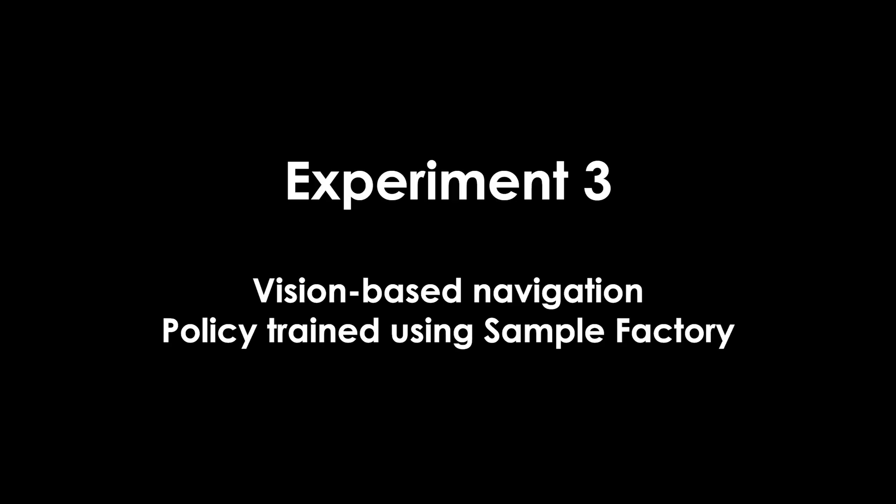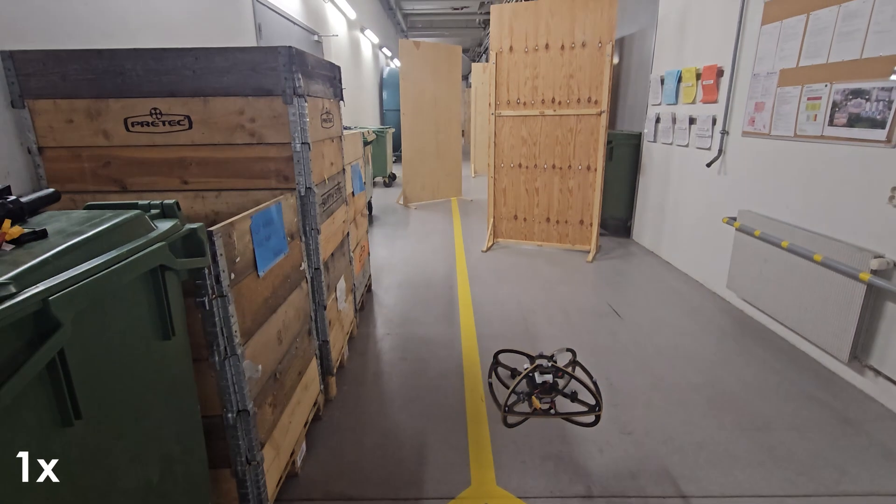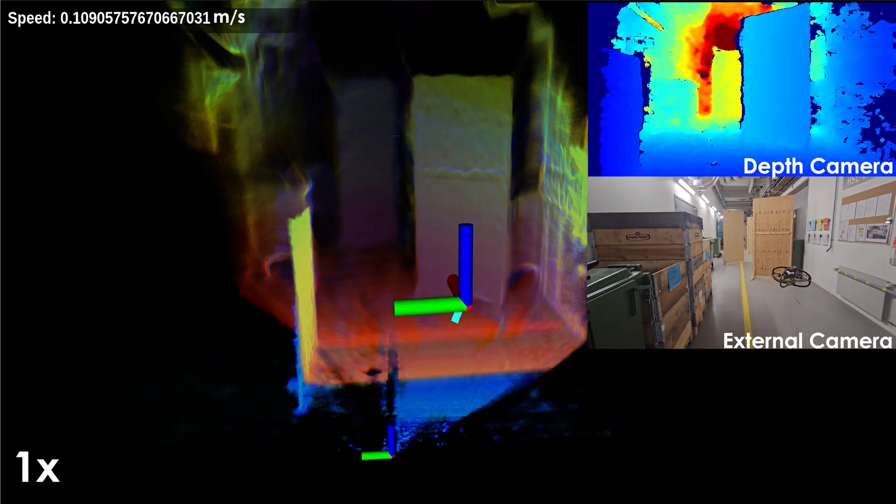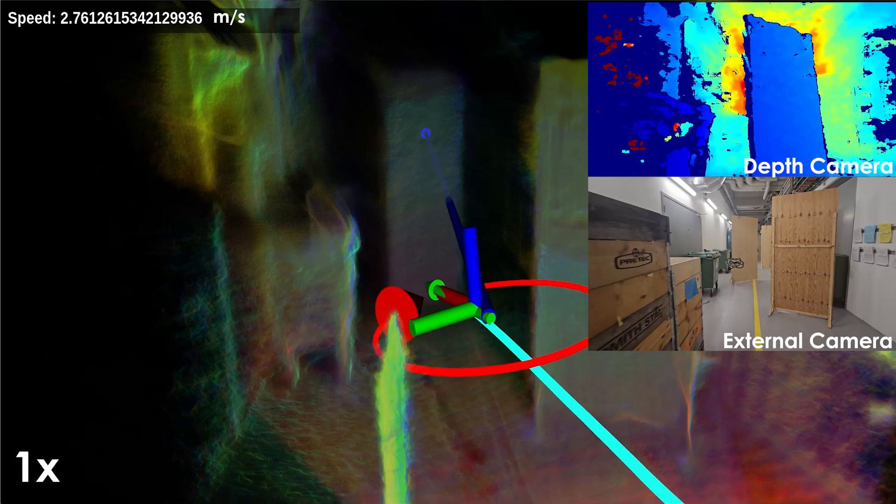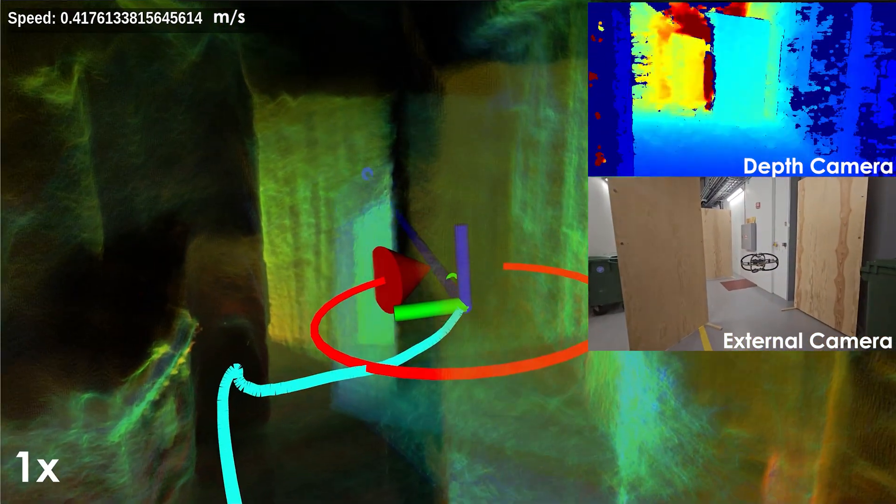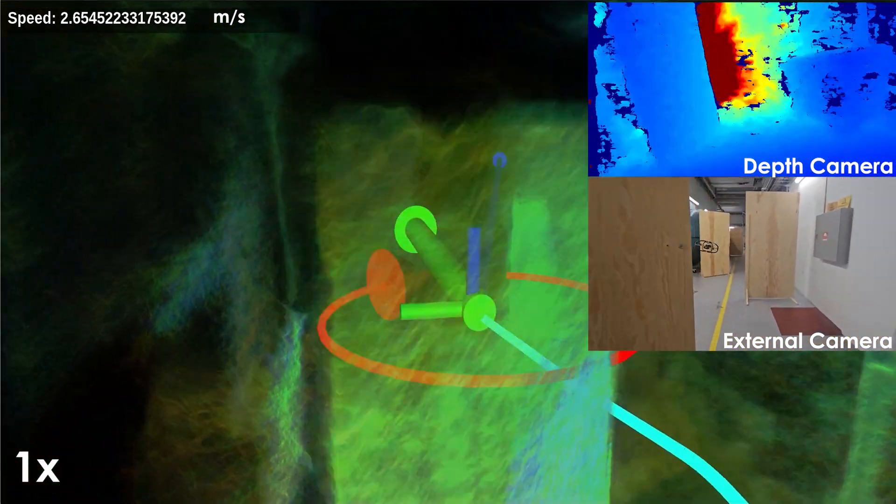Using the custom rendering framework, we train a depth-based navigation policy in simulation. The policy uses the robot's state and a compressed latent representation of the depth image to successfully navigate a cluttered corridor and reach the goal location in a real-world experiment.